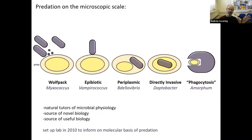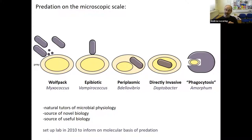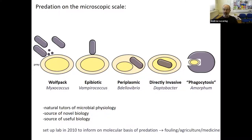Whatever mechanism we're talking about, these organisms are natural tutors of microbial physiology — a source of novel biology because their genomes are full of genes that have evolved to fit these specific lifestyles. They're a source of potential utility because we could use them to kill cells. In 2010, I set up my lab with the purpose of informing on how predation happens, with potential applications in agriculture, biofouling, medicine, and infection.